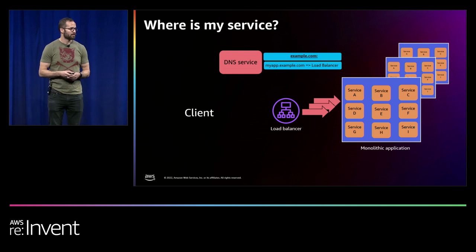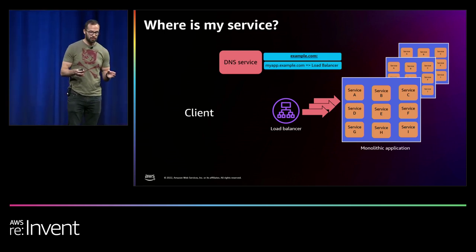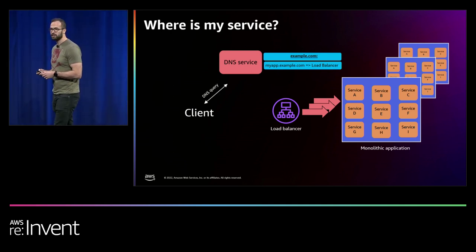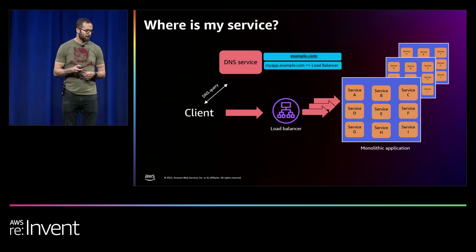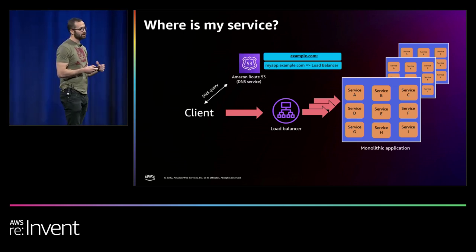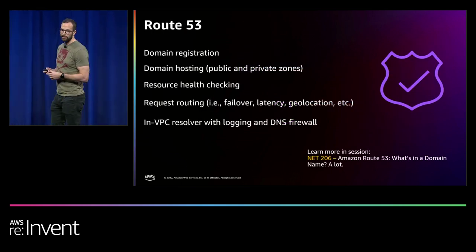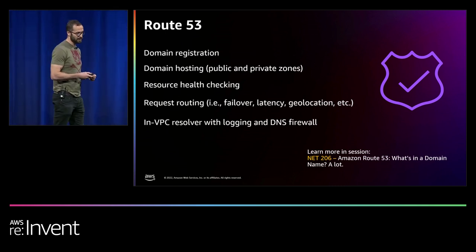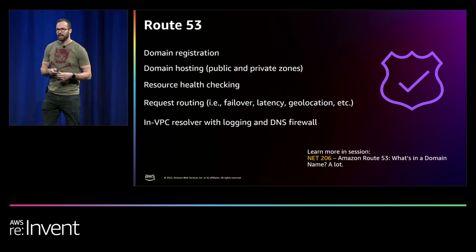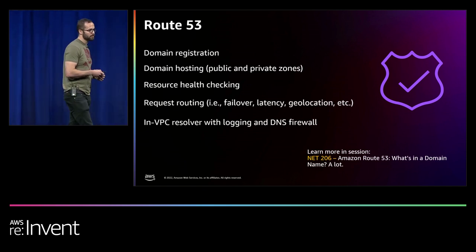For service discovery here, we're using DNS. DNS allows you to create a zone — in this case example.com — and configure records within that zone to point to your resource. You can set up myapp.example.com and point it to your load balancer, so the client sends a DNS query, gets the IP address of the load balancer, and can establish the connection. We have a managed service in AWS that takes care of DNS resolution and hosting: Amazon Route 53. You can use it for domain registration, hosting public or private domains, health checking, intelligent request routing based on geography, and in-VPC DNS resolution.